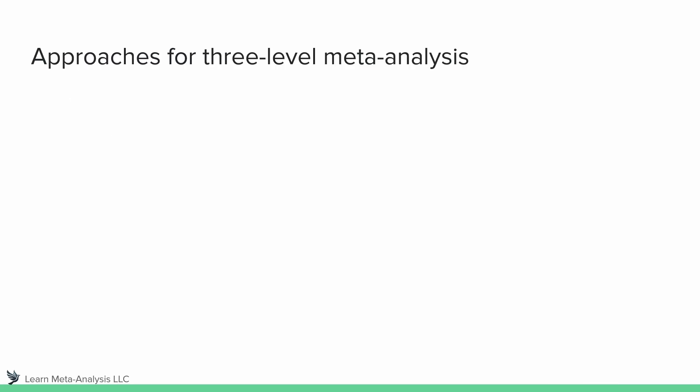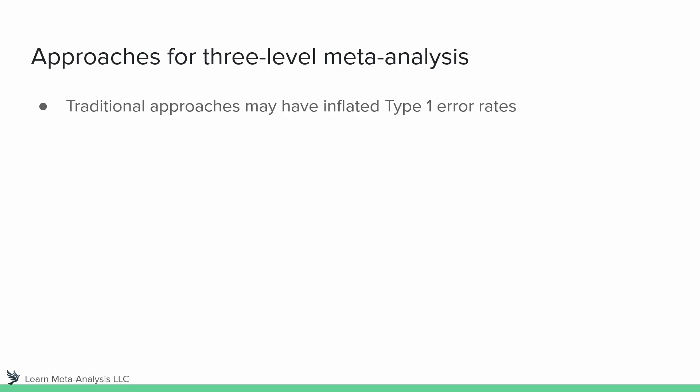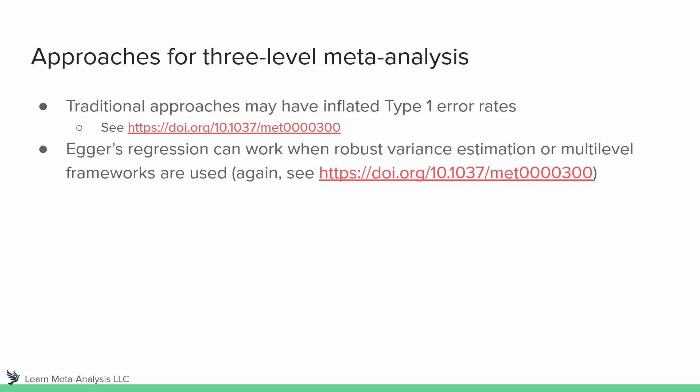What about three-level meta-analysis? All of those tests are applicable to two-level models, but what happens with a three-level model? A paper that came out relatively recently found that traditional approaches can have inflated Type I error rates, which is obviously not great. The DOI is included here — I highly encourage you to read that paper. Their findings showed that Egger's regression can work when using robust variance estimation or multi-level frameworks, and that paper covers this pretty well.